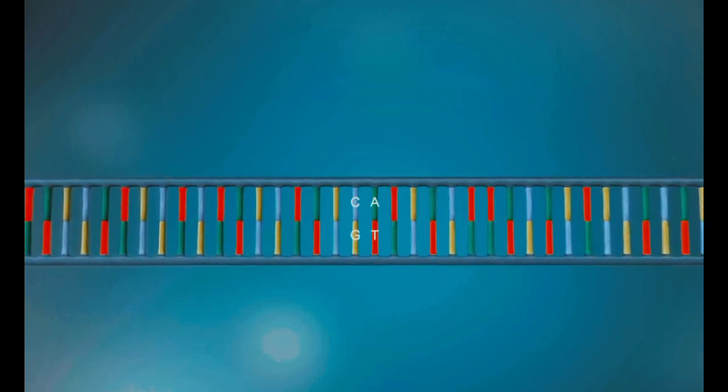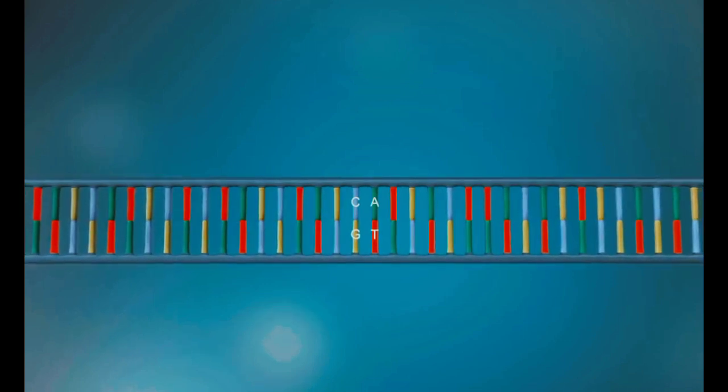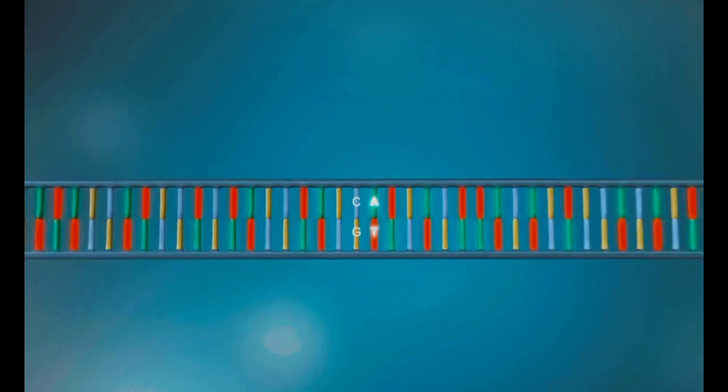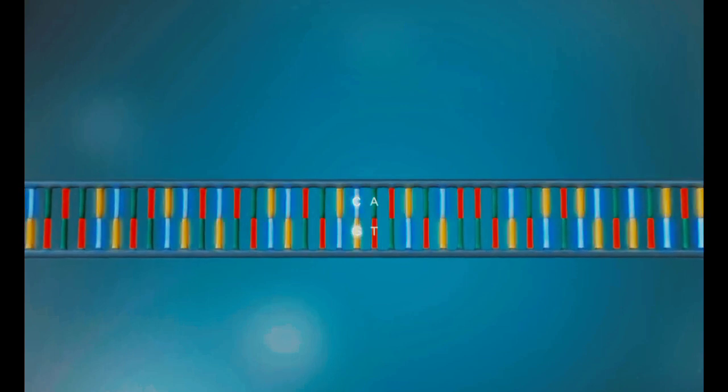The two strands are complementary. This means that wherever there's a T in one strand, there will be an A in the opposite strand, and wherever there's a C, there will be a G in the other strand.